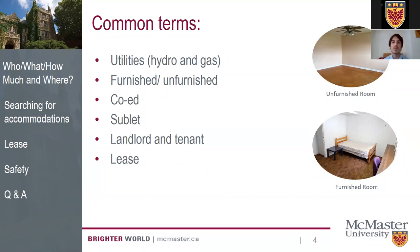A furnished apartment might include a desk, table, and bed. An unfurnished room means you're responsible for purchasing everything yourself — you won't be flying with a bed, but you'll need to buy one when you arrive. A co-ed posting means any gender can live there, though some listings request only male or only female tenants. A sublet is when you lease from someone who signed a lease but needs to move out, so you sub-lease their room from them.